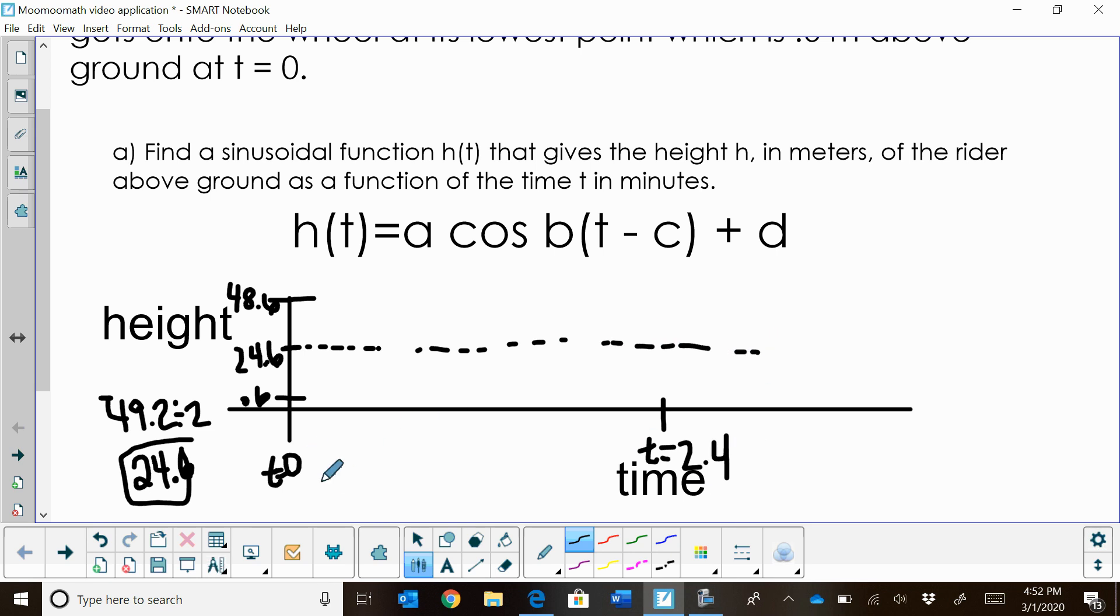We also need to find some points in between the time of 0 and the time of 2.4. We know we load right here at time 0 at 0.6. That means halfway through the cycle, which would be 1.2 minutes, I'm going to be at the very top. And then at 2.4 minutes, I'm going to be back down at 0.6 again. Halfway in between time 0 and time 1.2, which is 0.6 minutes, I'm going to hit halfway. And then over here at 1.8, which is three-quarters of the way, I'm also going to hit this midline.